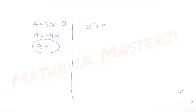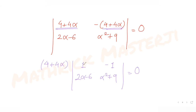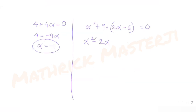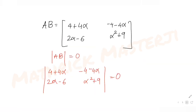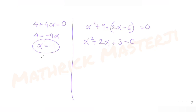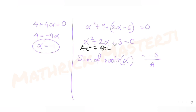For the second part, solving the determinant: 1·(α²+9) - (-1)·(2α-6) = 0, which gives α² + 9 + 2α - 6 = 0, so α² + 2α + 3 = 0. Instead of finding the actual values of α, I can use the sum of roots formula: sum = -b/a, where the equation is ax² + bx + c = 0. Here that gives -2/1 = -2.